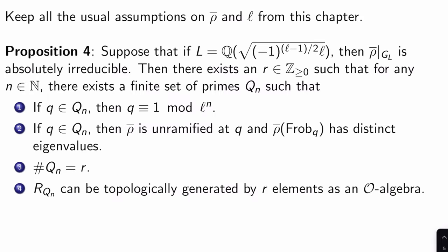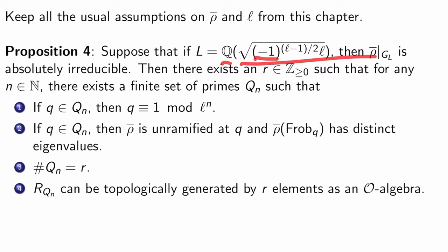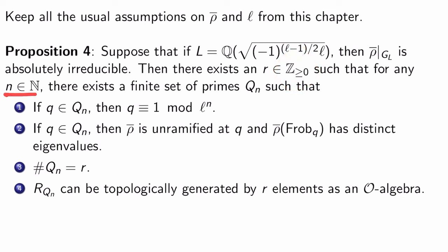Here's the big result of the video: Proposition 4. Keep all the usual assumptions on rho-bar, our plausibly modular representation, and L will be an odd prime. Proposition 4 says that if L is the field Q adjoined the square root of (-1)^((L-1)/2) times L, then rho-bar restricted to the Galois group of L is absolutely irreducible. Then there exists a magic number R — a non-negative integer — such that for any N in N, there's a finite set of primes Q_N with four properties, and the same R works for each N regardless of what N is.